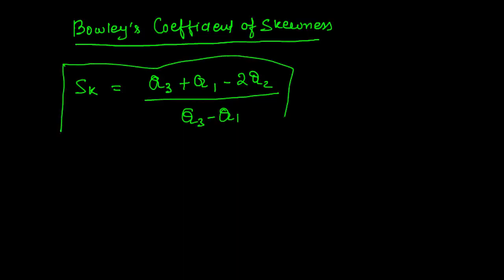So basically this coefficient of skewness is based upon quartile values where q1, q2, and q3 are first, second, and third quartile values.